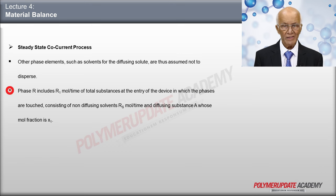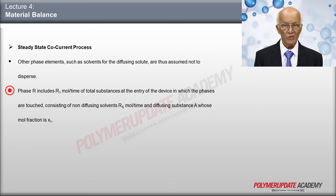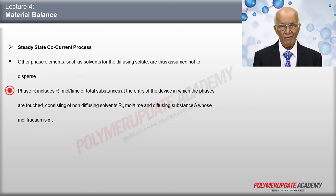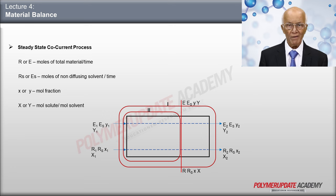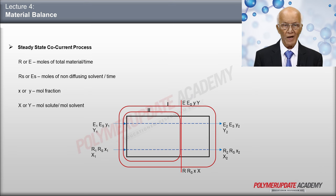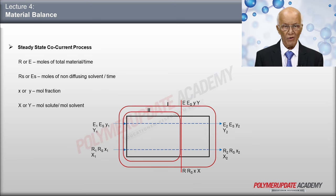At the entrance to the device in which the phases are contacted, phase R contains R1 moles per unit time of total substances consisting of non-diffusing solvents RS moles per unit time, and the diffusing substance A whose mole fraction is x1. This is the schematic diagram of the co-current operations. On the left-hand side, both streams R and E are entering. R could be designated as R1 or RS, which remains constant. Small x1 is the mole fraction of diffusing substance A, and capital X1 is the moles of A divided by moles of non-diffusing solvents.